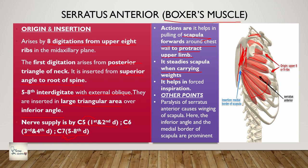The actions of serratus anterior are: it helps pull the scapula forward around the chest wall to protract the upper limb; it steadies the scapula when carrying heavy weights; and it helps in forced inspiration. Paralysis of serratus anterior causes winging of the scapula, where the inferior angle and medial border of the scapula become prominent. This is an important point asked in viva about the scapula.